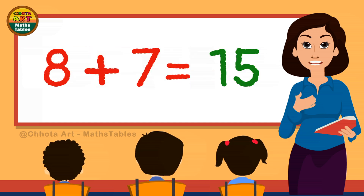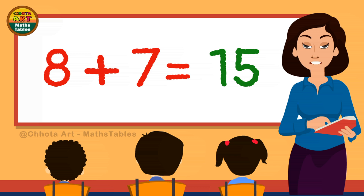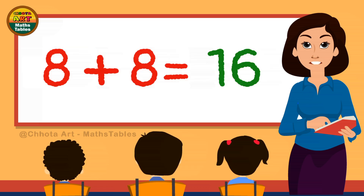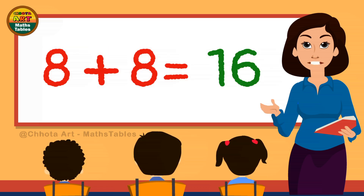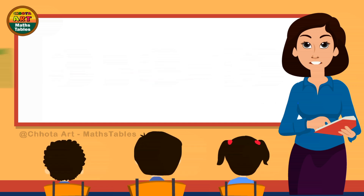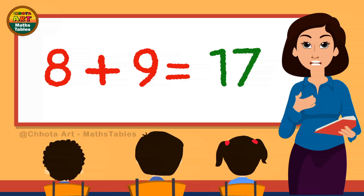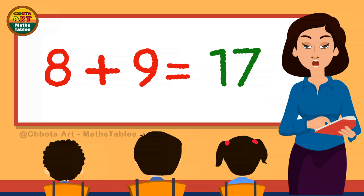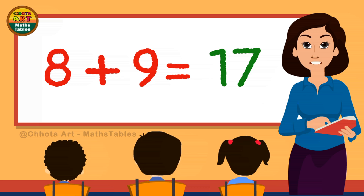8 plus 7 is 15. 8 plus 8 is 16. 8 plus 9 is 17. 8 plus 9 is 17.